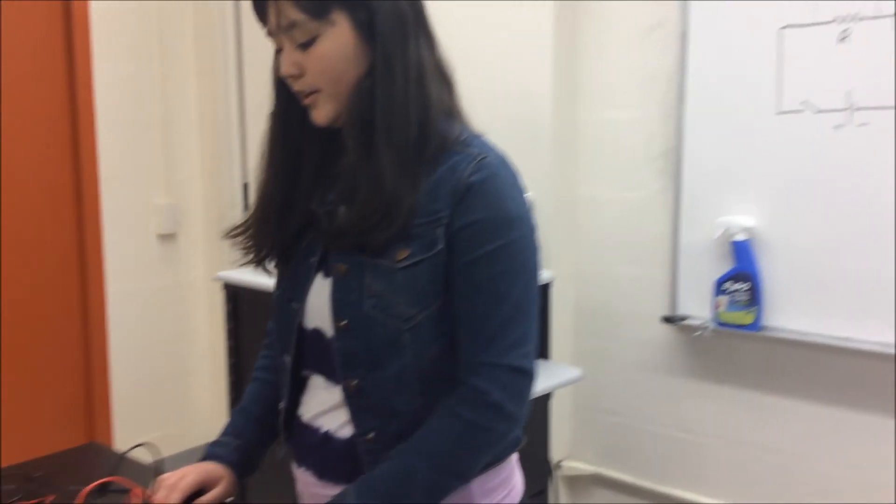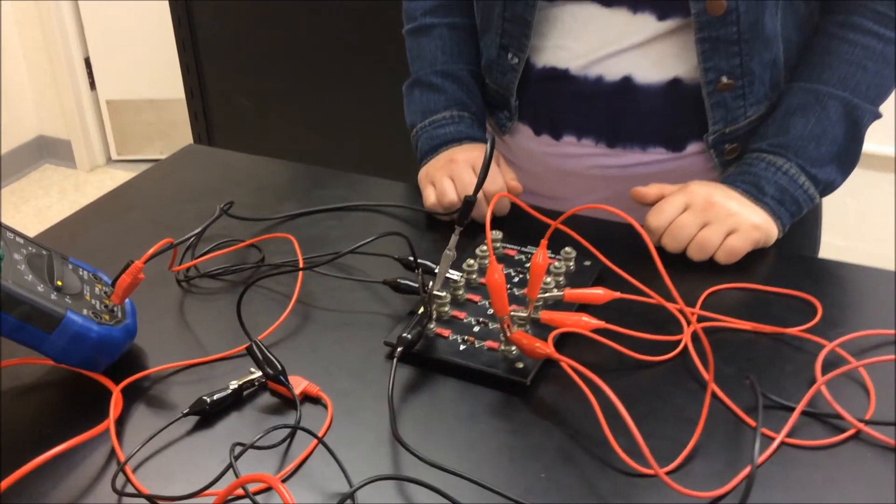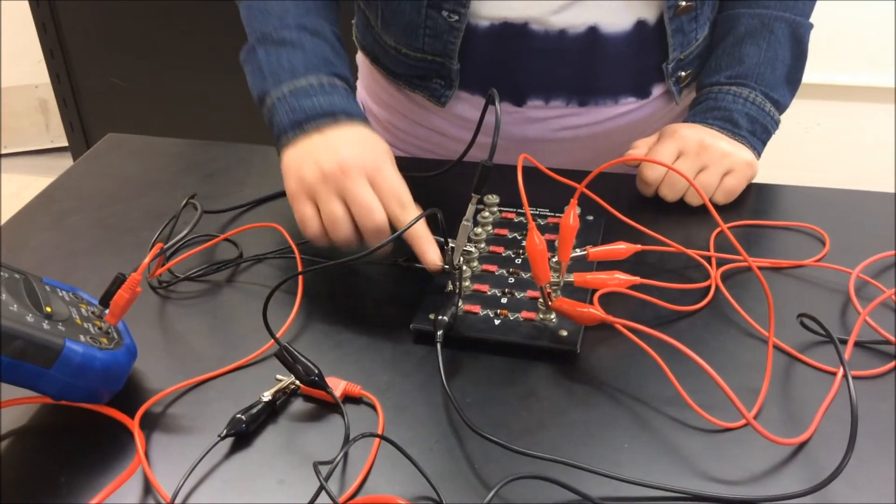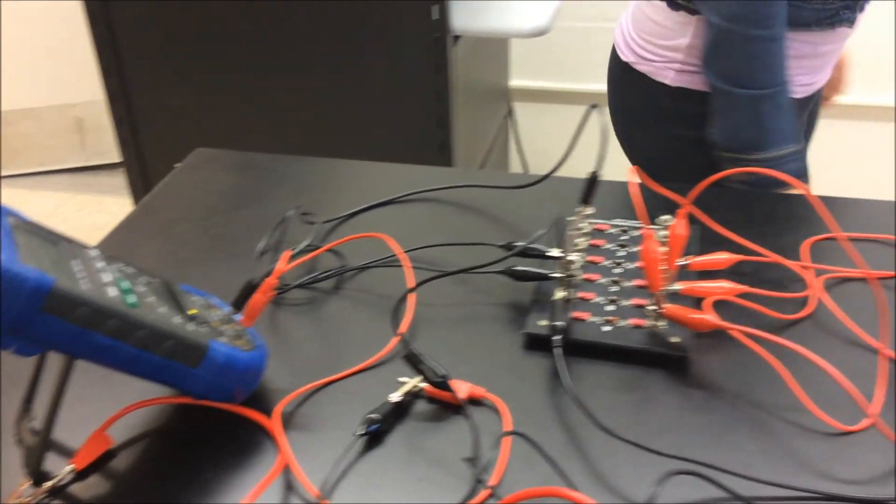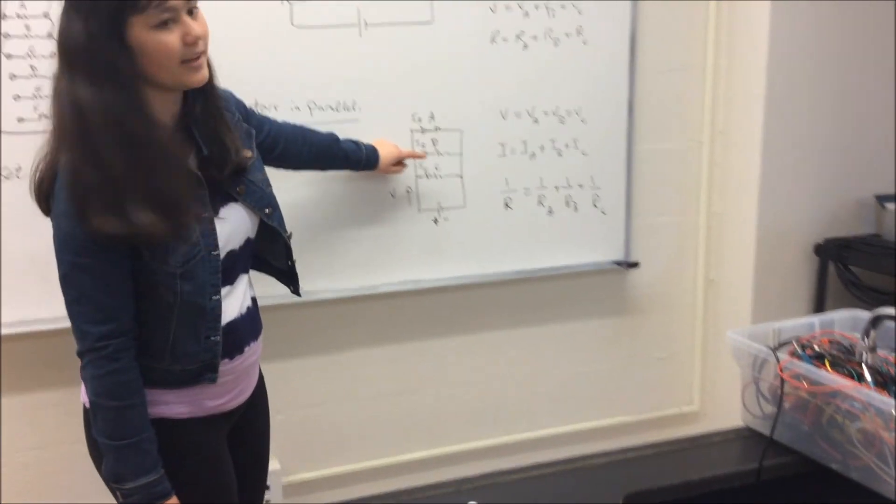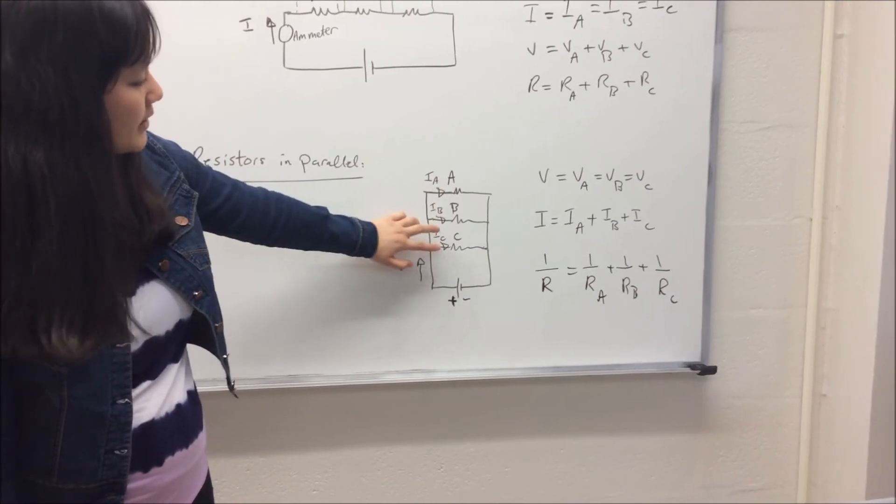And this is how it's going to look like. In order to measure the current across resistor A, you're going to replace the connection between A and B with the ammeter. And you're going to do the same thing as shown in this diagram for B and C by replacing the connection with an ammeter at all of these points.